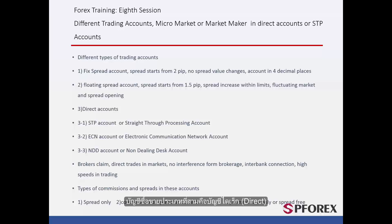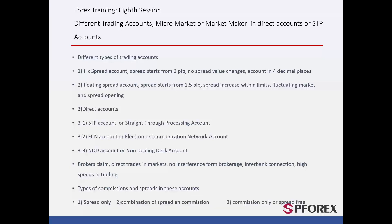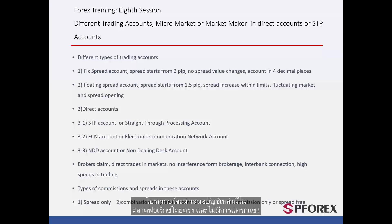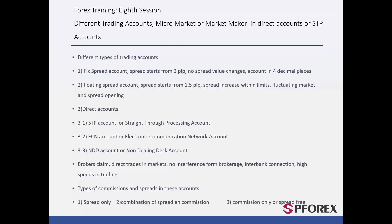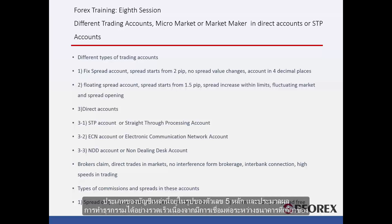The third type of trading account is a direct account. They are split into STP or straight through processing accounts, ECN or electronic communication network accounts, and NDD or non-dealing desk accounts. Based on these accounts, brokers claim that they offer straight accounts to the market and there is no manipulation involved. This basically means all losses and gains are a direct reflection of the market and a broker has nothing to do with the process. These types of accounts are also in a 5-digit format and transactions are made very fast as it is an interbank connection that a party deals with.